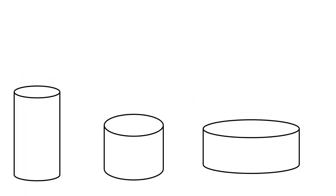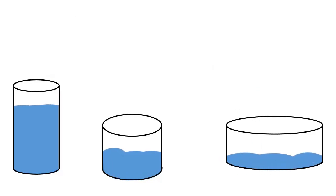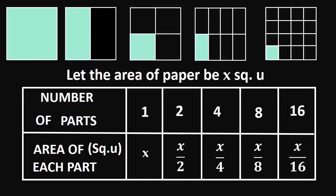Let us take three containers of different sizes with circular base. We shall pour the same amount of water in each container. We see that when the diameter of the container increases, the height of the water level decreases. Take a paper and fold it as you see on the screen. When the number of parts increases, area of each part decreases.